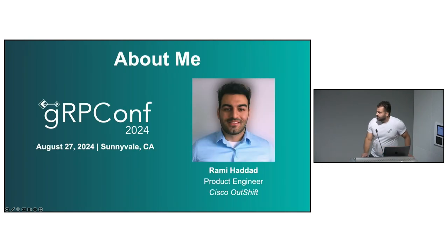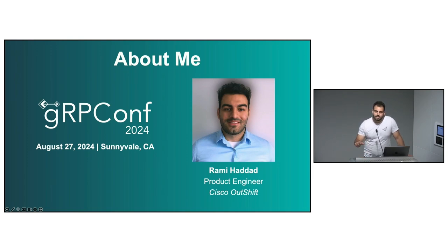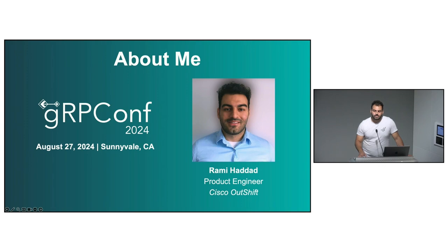A little bit about myself: I'm Rami Haddad from Amsterdam, the Netherlands. I work for Cisco Outshift, which is a department in Cisco that tries to focus on markets the company typically does not work in — for example, security on the software side. I personally worked in the cloud security space and did some research on API security, and lately a bit into gRPC specifically with privacy engineering.